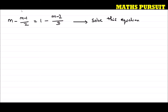Solving this type of equation is a very simple and easy one. So let's see how we can solve it. We will first target removing the denominator 2 and then we will remove the denominator 3. This 2 and this 3 we are going to remove.